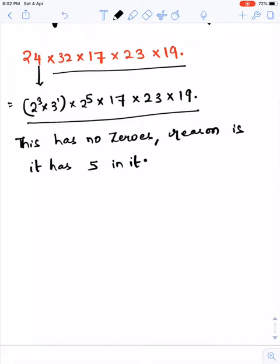Zero is formed when it is a combination of 2 and 5, we get 10. There is no five in it. Because of that, there are no zeros in that expression.